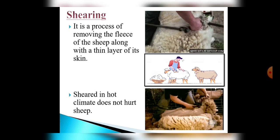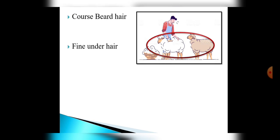These animals bear two types of hair. The outer coat hairs are called coarse hair, and fine soft under hair are called fleece. Fleece is found close to the skin and is used to obtain wool.